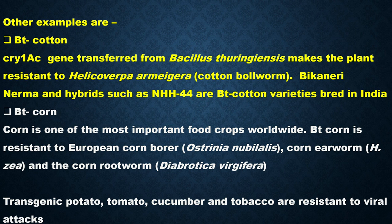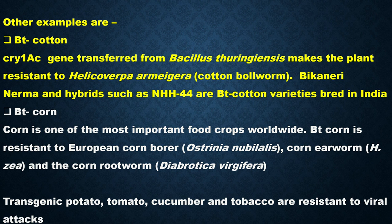A prominent example is Bt cotton. The cry1Ac gene transferred from Bacillus thuringiensis makes the plant resistant to the cotton bollworm, scientifically known as Helicoverpa armigera. Bikaneri Nerma and hybrids such as NHH44 are Bt cotton varieties bred in India. Production of Bt cotton was first started in China in 1997 and was introduced in India in 2002, after which India became one of the top producers of Bt cotton.